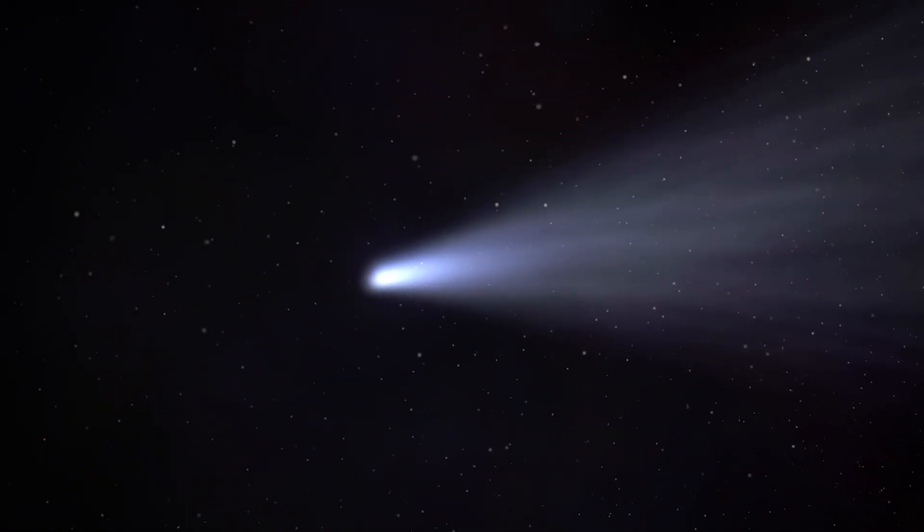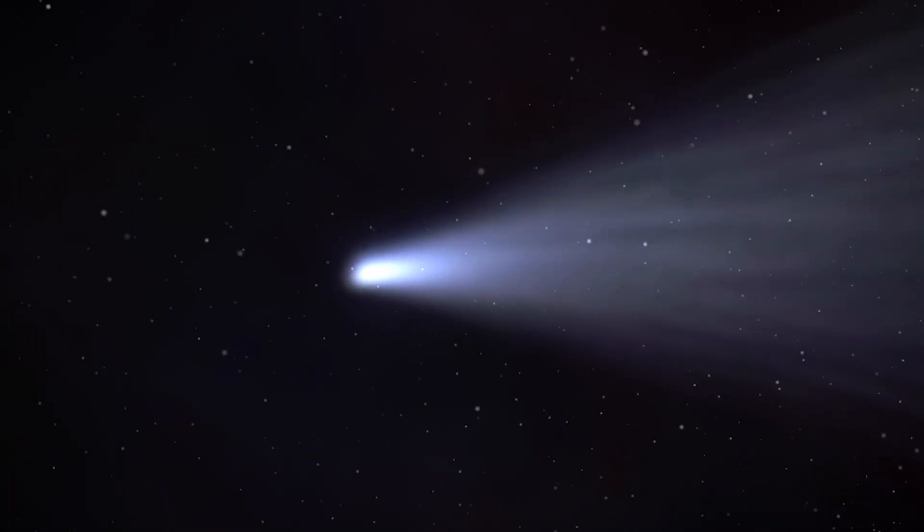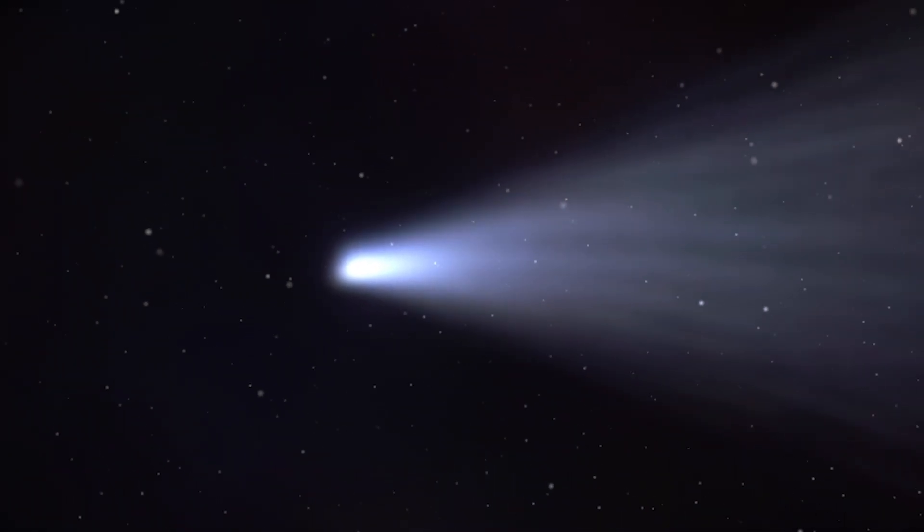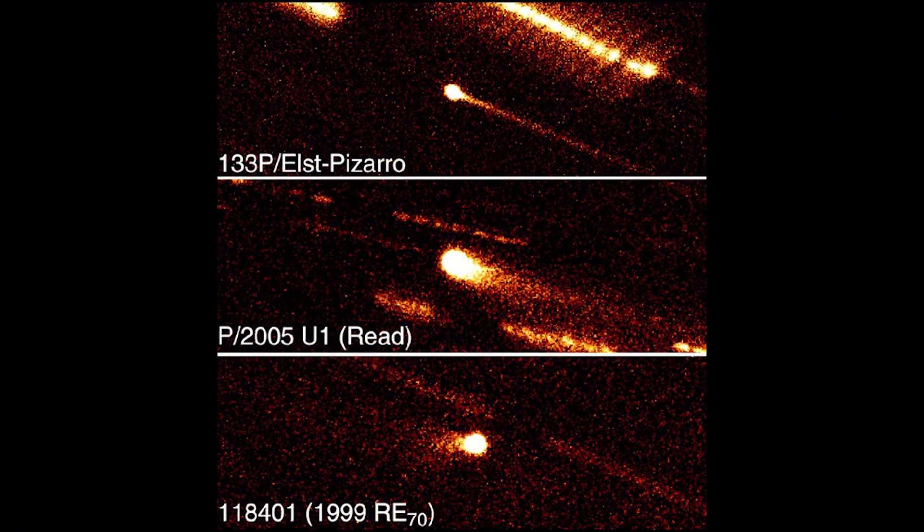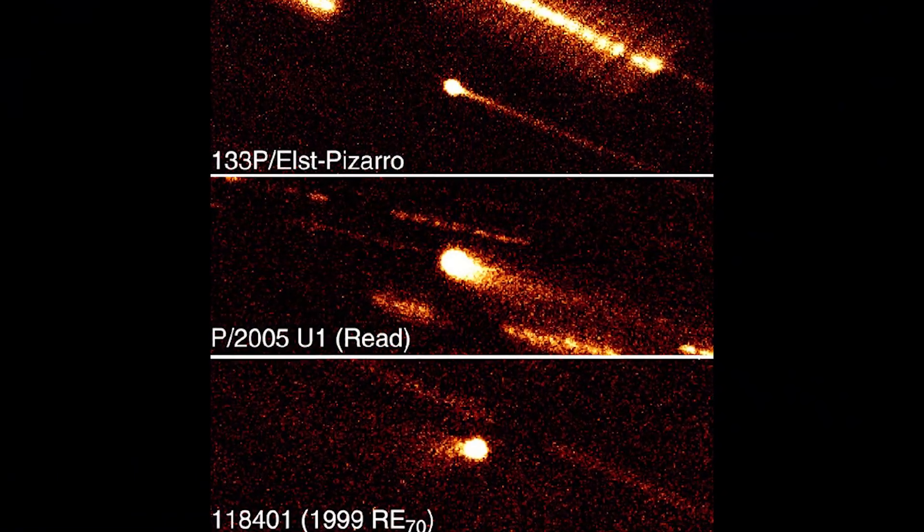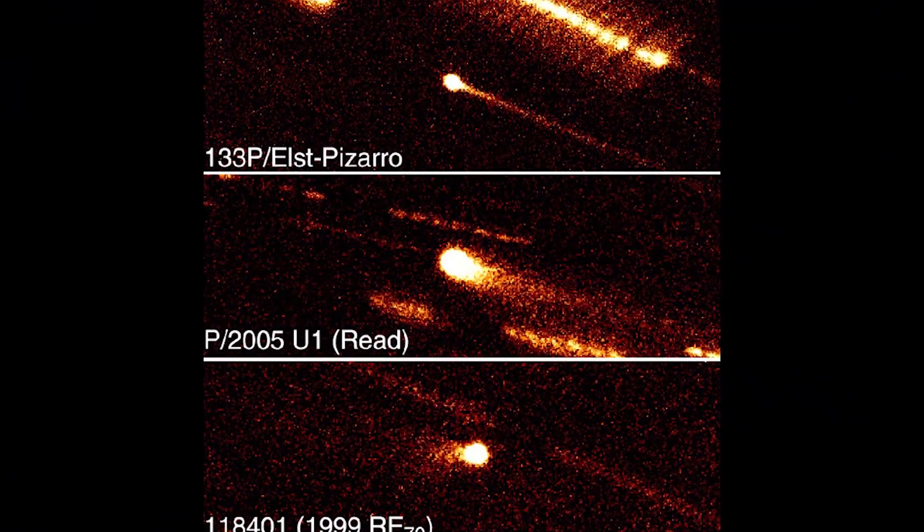Comet Read was one of the first three comets to be used in categorizing main-belt comets, a relatively new classification. The two other comets are Elst-Pizarro and 133P/Elst-Pizarro.